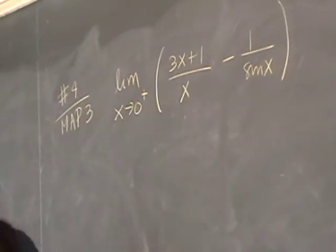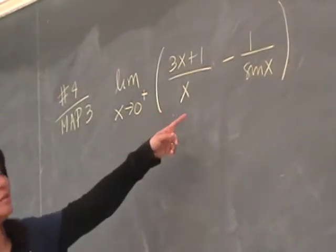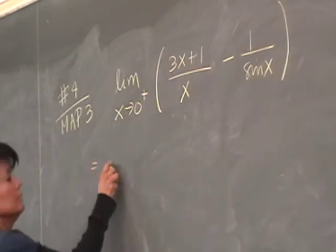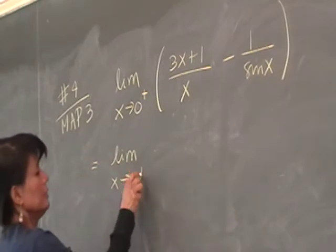So number 4, we want to find the limit as x approaches 0 from the right of this quantity. So what are we going to do? We can do it, just look at it separately, right?